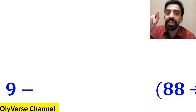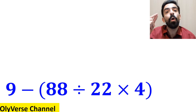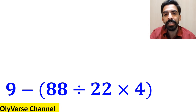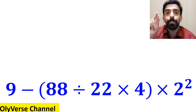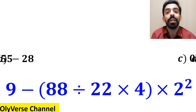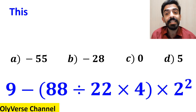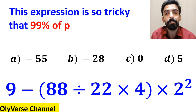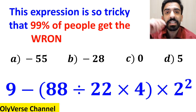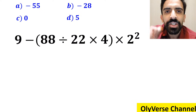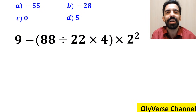What is the value of the expression 9 minus (88 divided by 22 times 4) multiplied by 2 squared? Which option do you think is the correct answer to this question? This expression is so tricky that 99% of people get the wrong answer. Let's go through this question step by step and solve it together.